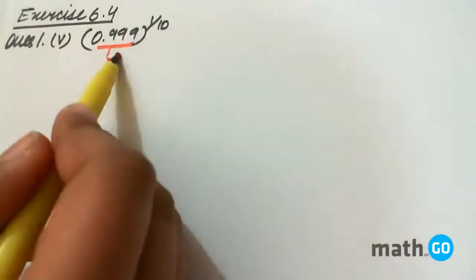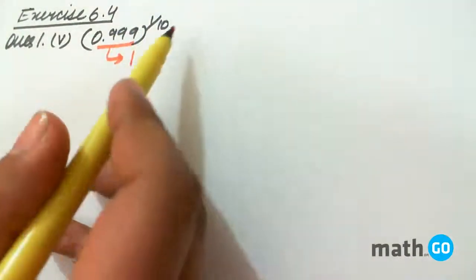Exercise 6.4 question number 1 fifth part, which is find the approximate value of 0.999 to the power 1 by 10. Now if you have 0.999, you would have 1, you have simply written this answer 1.